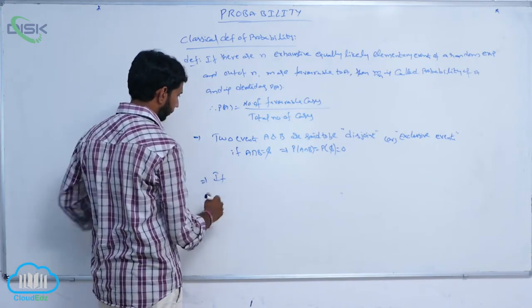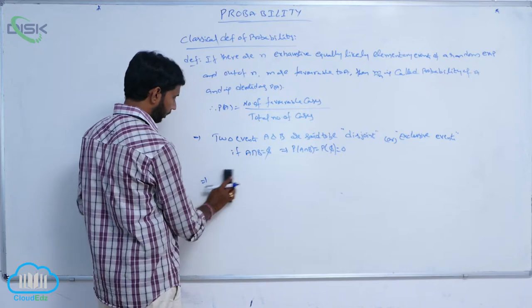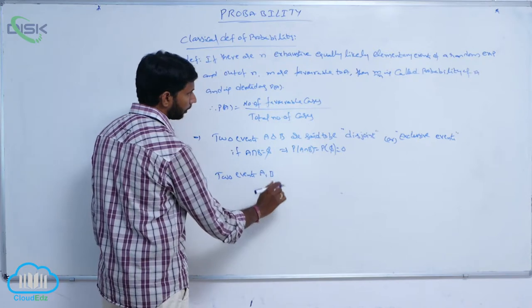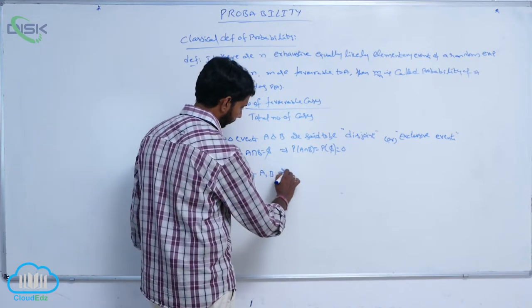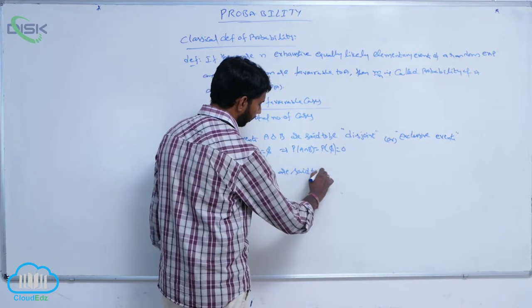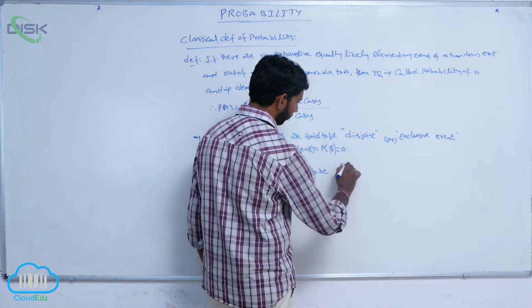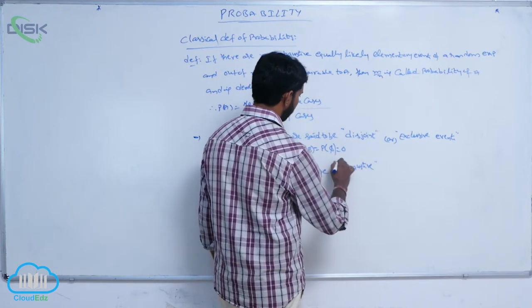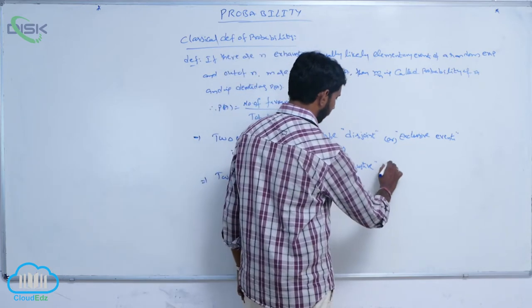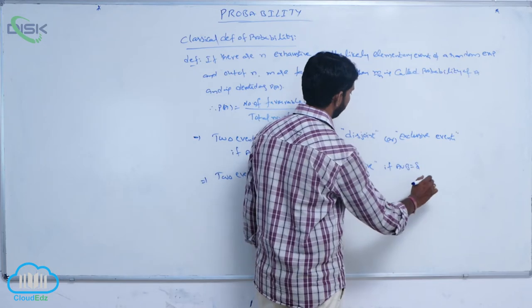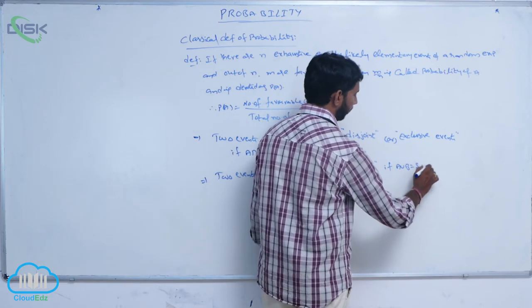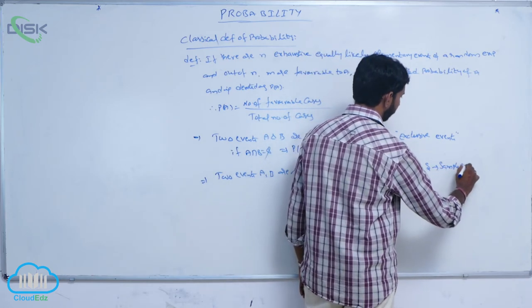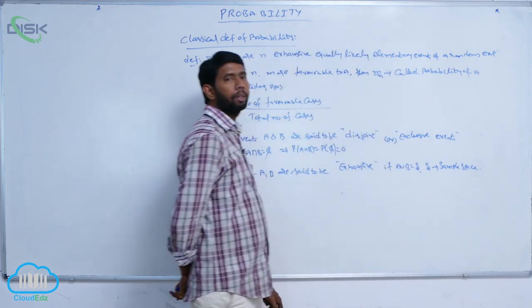Two events, capital A and capital B, are said to be exhaustive if A union B is equal to S, where S is the sample space of a random experiment.